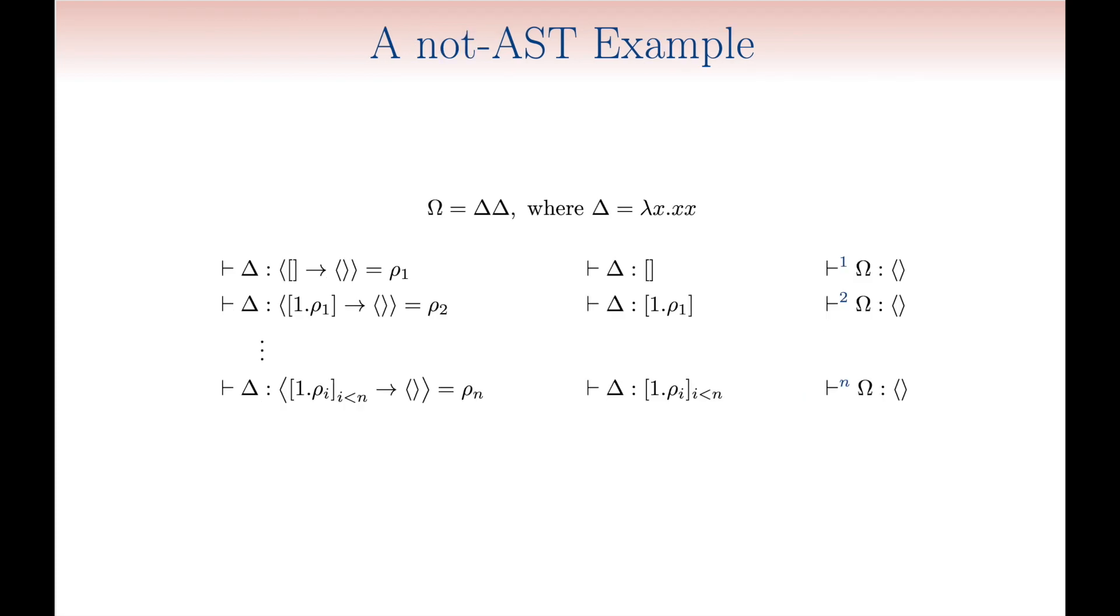As a second example, we consider the infamous term omega, which is well known to always diverge. It should come as a surprise, at least for those familiar with intersection type, that one can type omega. Indeed, any type derivation for it is bound to have the empty type distribution as its conclusion.